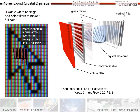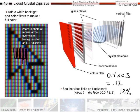A major challenge is efficiency: a typical polarizer is only about 40% efficient, and a color filter transmits only about one-third of the visible spectrum. Combined, that gives at best 0.4 × 0.3 ≈ 12% efficiency from backlight to viewer. In practice, LCDs waste more than 90% of backlight energy. Without these optical losses, an LCD display could appear roughly 10 times brighter than it currently does.